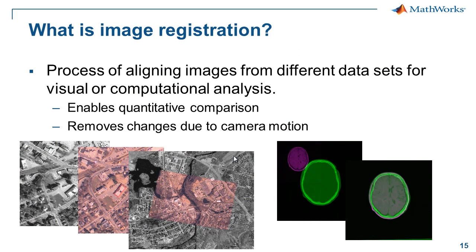This brings us to our final topic: image registration. Image registration is the process of aligning images from different datasets for either visual comparison or computational analysis. You might use it for maps collected from multiple satellites, or 3D medical imaging where you're registering multiple images to give a more comprehensive dataset for further processing.